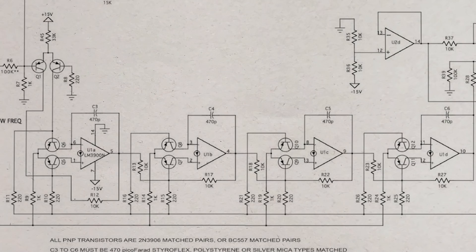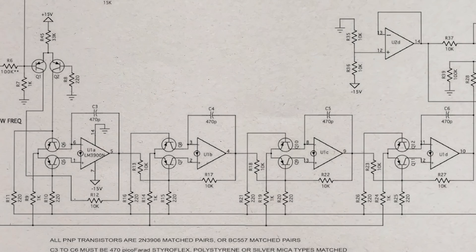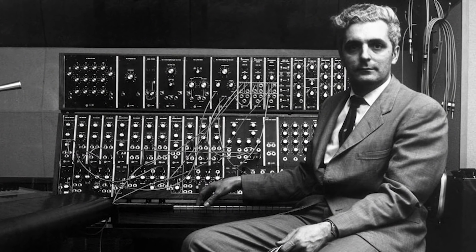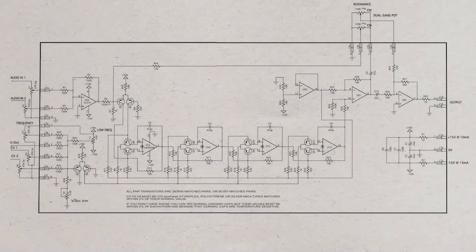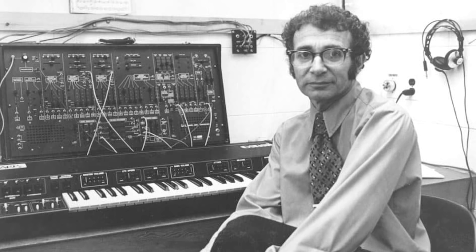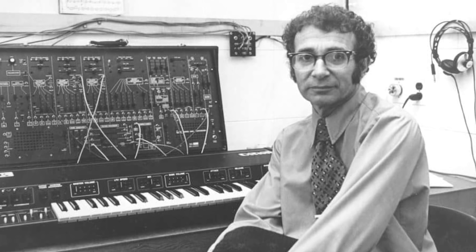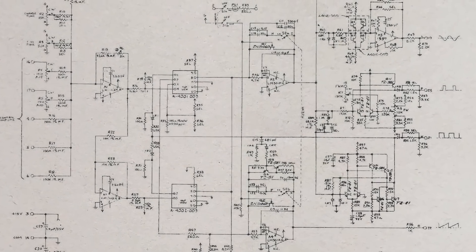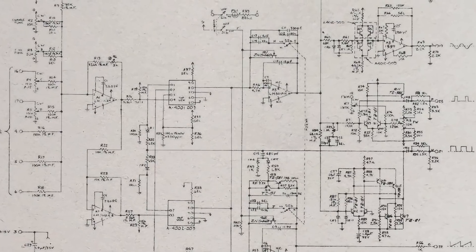The story goes that Bob Moog made a visit to Alan R. Perlman and pointed out that ARP was using his filter. Alan R. Perlman characterized it as having been a little bit intense. But Alan maintained that while it was similar, it wasn't stolen. He had started out with a diode-based filter and merely tried substituting transistors. The sound, as we know, was pretty great.